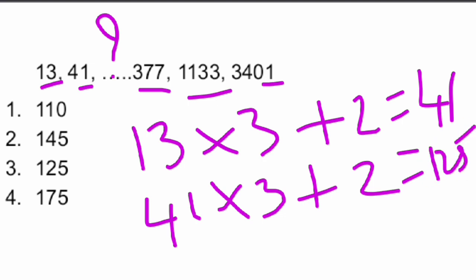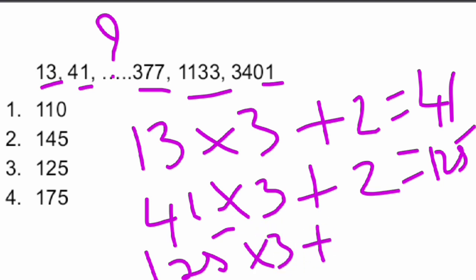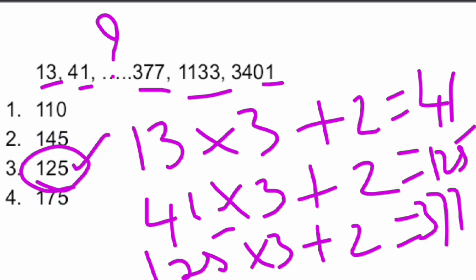We get 125 as the missing number. To verify: 125 × 3 + 2 = 375 + 2 = 377. That checks out. Therefore our answer is 125. The series follows the pattern: 13 × 3 + 2 = 41, 41 × 3 + 2 = 125, and so on. So our answer is 125.